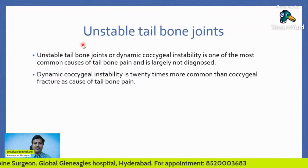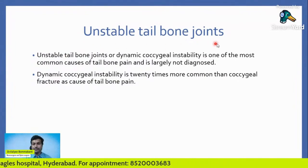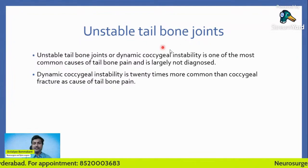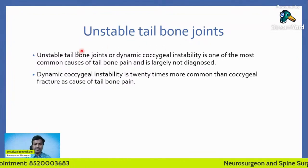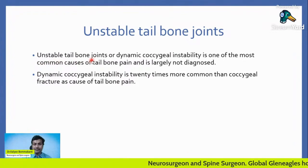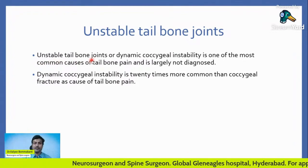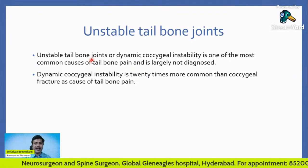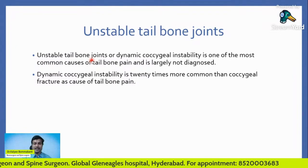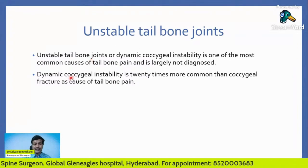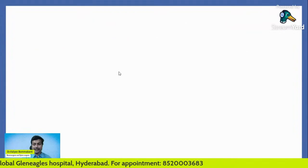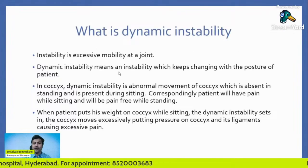You need to understand the concept of unstable tailbone joints. The coccyx is the tailbone, and dynamic coccyxial instability is one of the most common causes of tailbone pain, yet it is largely undiagnosed. Importantly, dynamic coccyxial instability is 20 times more common than a coccyxial fracture.